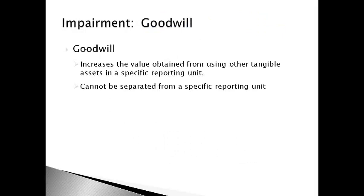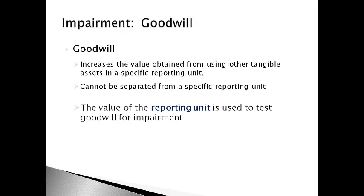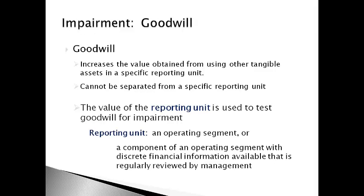Goodwill is a different type of asset in that it increases the value obtained from using other tangible assets in a reporting unit. It only exists within another reporting unit and cannot be separated from its specific reporting unit. Therefore, the value of the reporting unit must be used to test goodwill for impairment. A reporting unit is an operating segment or a component of an operating segment where discrete financial information is available and regularly reviewed by management, with separate management and assets.